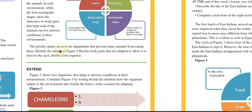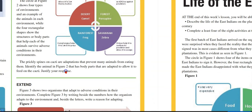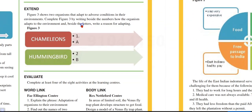The prickly spines on cacti are adaptations that prevent many animals from eating them. Identify the animal in Figure 2 that has body parts adapted to allow it to feed on cacti and justify your answer. Is it the camel? Is it the frog? Is it the zebra or the porcupine? You would tell us which one.